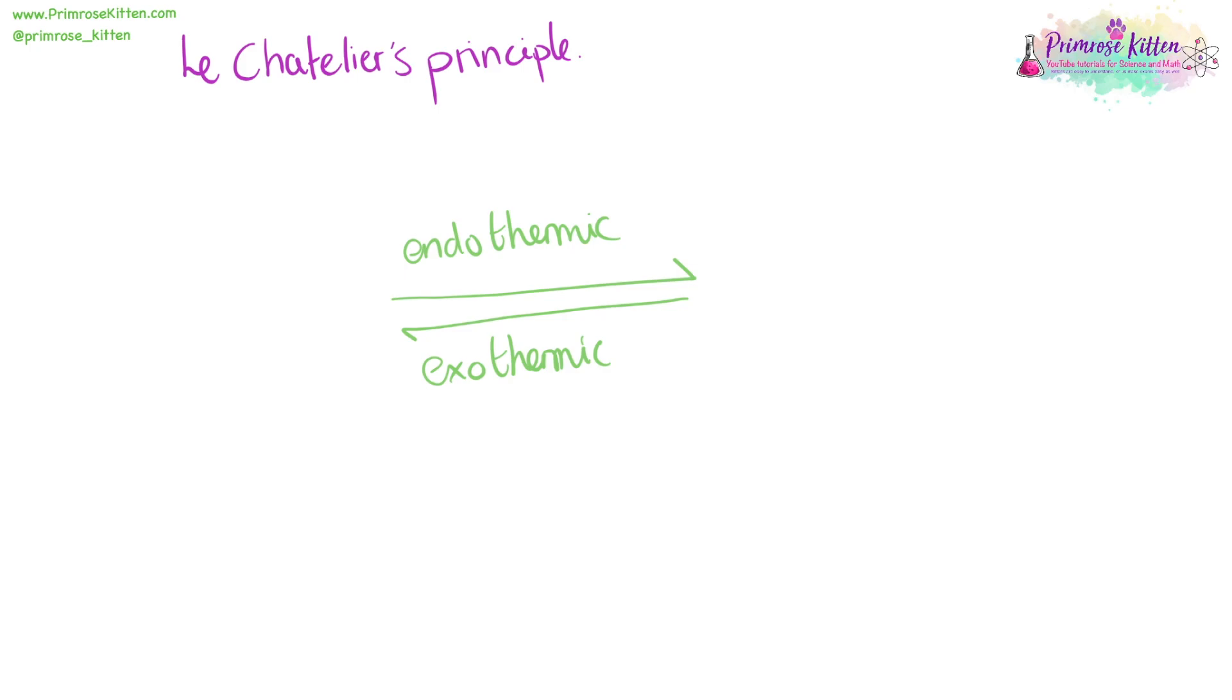Le Chatelier's principle tells us that whatever you do to a reversible reaction the reaction will do the opposite. So in this reaction, this way is endothermic and this way is exothermic. So if you heat up a reaction, the endothermic reaction will increase to compensate and the exothermic reaction will decrease to compensate. Whereas if you decrease the temperature, then the endothermic reaction will decrease to compensate and the exothermic reaction will increase to compensate so that the overall temperature stays the same.